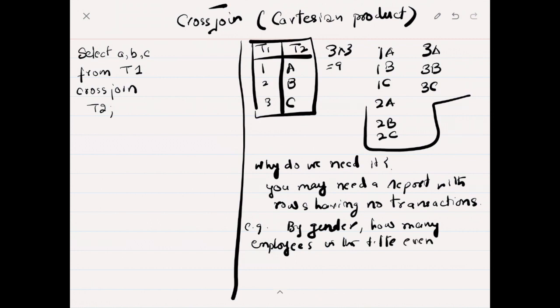He wants to see the ratio by gender. Another example could be you want to get reports of all products by sales, and you want to also have the products which have no sale at all.